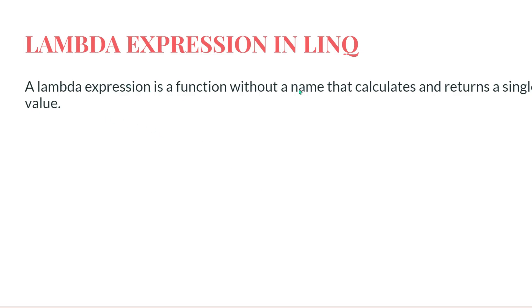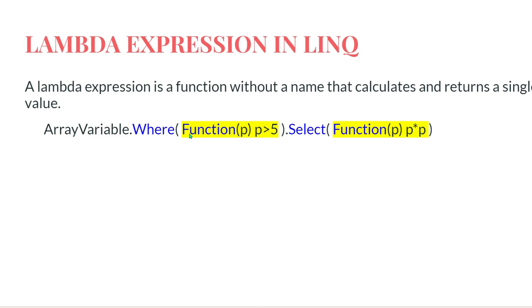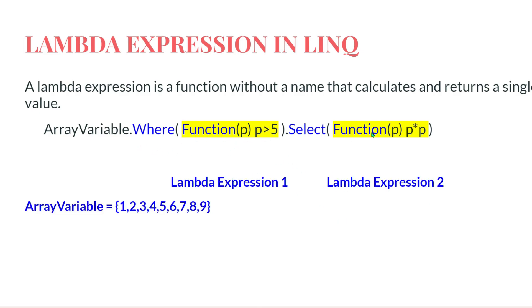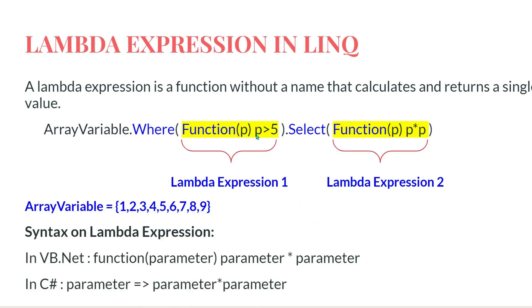Now let's understand what a lambda expression is. A lambda expression is a function without a name that calculates and returns a single value. In programming languages like Python, a function is defined with a name, but a lambda expression is a function without a name. For example, 'Function(p) p > 5' is one lambda expression, and 'Function(p) p * p' is the second. The variable name can change - you can use any variable - but the structure remains the same.